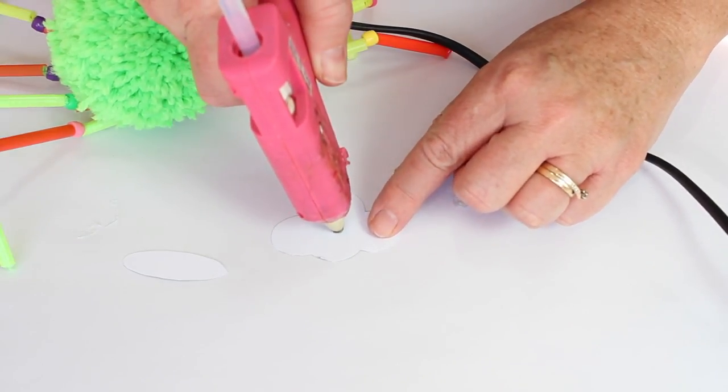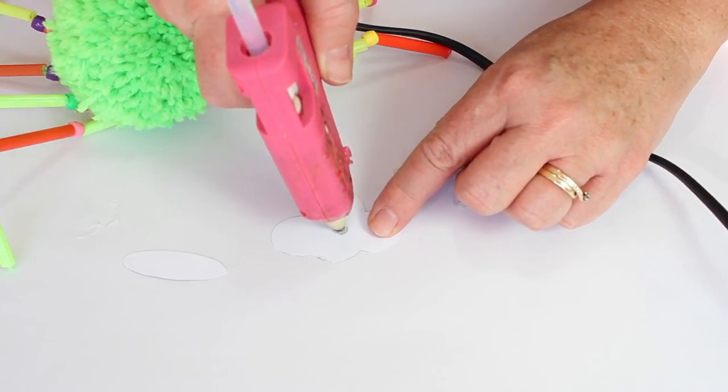If you're not going to animate the eyes and mouth, then just glue on the paper pieces to the pom-pom.